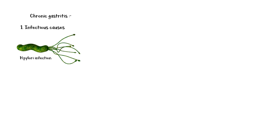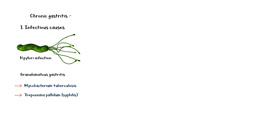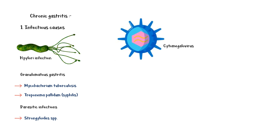Chronic gastritis also has both infectious and non-infectious causes. The major infectious cause is Helicobacter pylori. Additional infectious causes include granulomatous gastritis associated with Mycobacterium tuberculosis, and Treponema pallidum, which causes syphilis. Parasitic infections, especially with Strongyloides species, and infection with cytomegalovirus are also infectious causes of chronic gastritis.